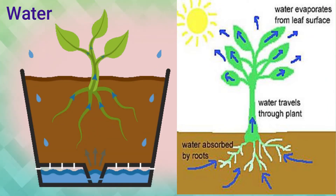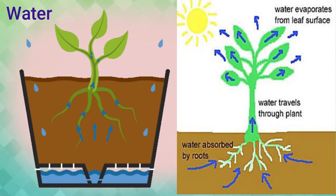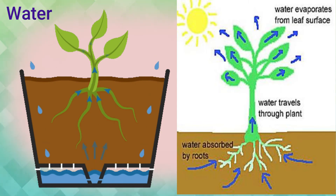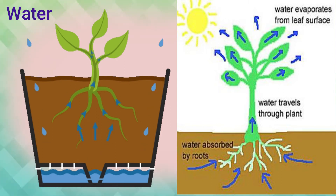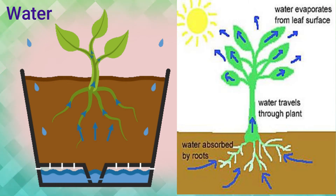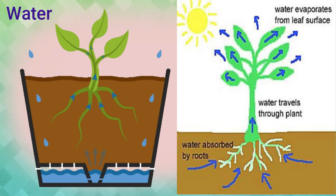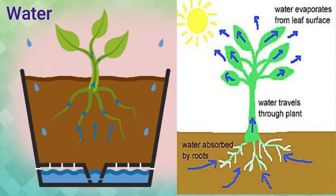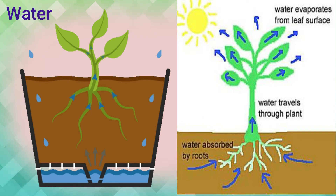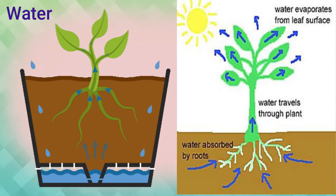Water: water is absorbed by the roots. The vessels present in the stem help to carry water to different parts of the plant. This is how the plant gets water.